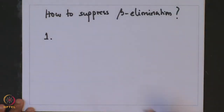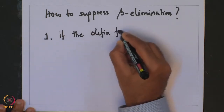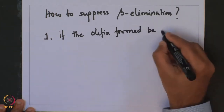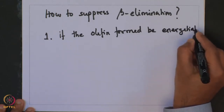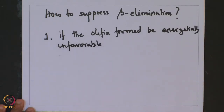The first strategy was: if the olefin formed is energetically unfavorable, that would be a nice strategy. Because beta elimination always leads to the formation of an olefin, and if one designs the alkyl moiety such that the olefin that forms from it becomes energetically unfavorable, then probably the beta elimination will not proceed. This was a very clever and ingenious way of stopping beta elimination.